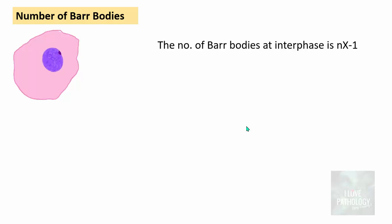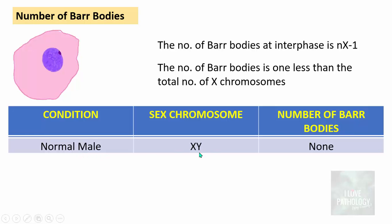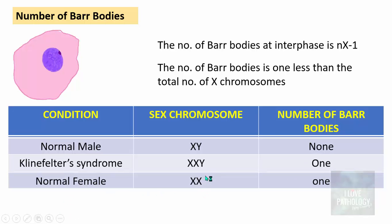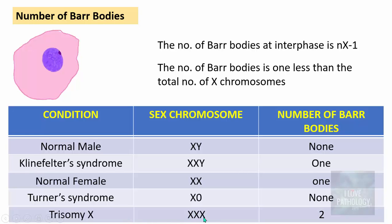The number of Bar Bodies at an interphase nucleus is NX minus 1 — one less than the number of X chromosomes. In a normal male (XY genotype), Bar Bodies = 1 minus 1 = none. In Klinefelter syndrome (XXY), Bar Bodies = 2 minus 1 = 1. In a normal female (XX), Bar Bodies = 2 minus 1 = 1. In Turner syndrome (45,X), Bar Bodies = 1 minus 1 = none. In Trisomy X (XXX), Bar Bodies = 3 minus 1 = 2. Remember: total Bar Bodies is always one less than the total number of X chromosomes.